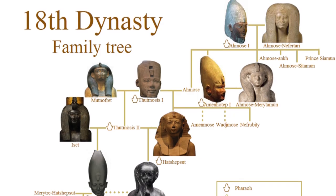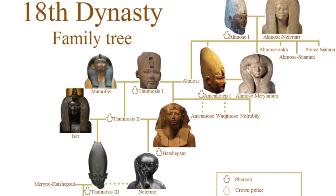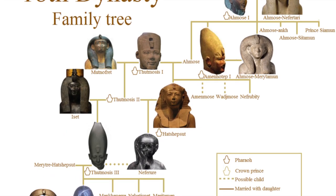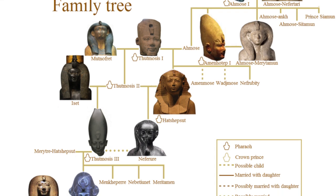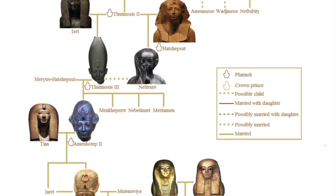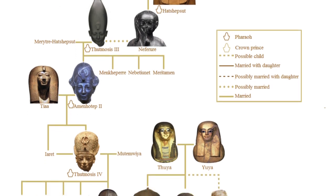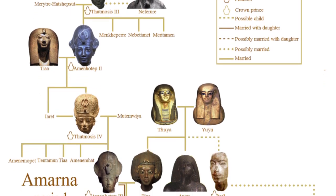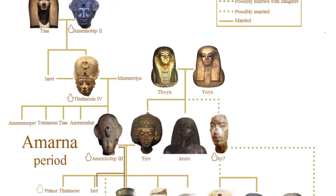Around 1350 BCE, ancient Egypt had undergone both an art and religious revolution, all thanks to one man: Akhenaten. Son of Pharaoh Amenhotep III, Akhenaten was in co-regency with his father for the last years of the latter's life. Akhenaten came to sovereign power after his father passed away in 1353 BCE, during Egypt's 18th dynasty in the New Kingdom.